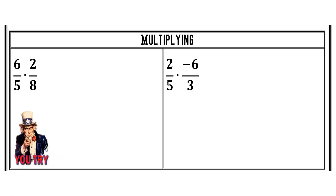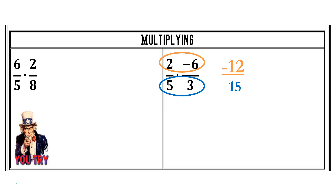Multiplying fractions is often easier than adding and subtracting because we don't need common denominators. When you multiply, you just multiply straight across: numerator times numerator, denominator times denominator. So 2 times negative 6 gives me negative 12. Your negative rules still apply — if you multiply opposite signs, you get negative; same signs, positive. 5 times 3 gives me 15.